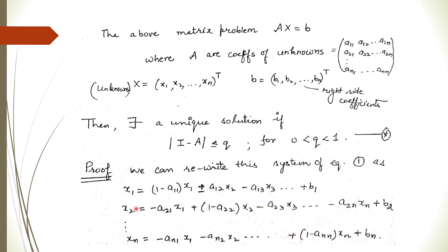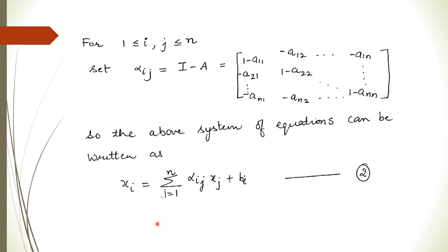In the same way, in the second equation we add x2 to both sides and take all other terms to the right-hand side, and so on. What we get is a new system of equations with coefficients (1 - a11), -a12, ..., -a1n, and so on, forming a new coefficient matrix.